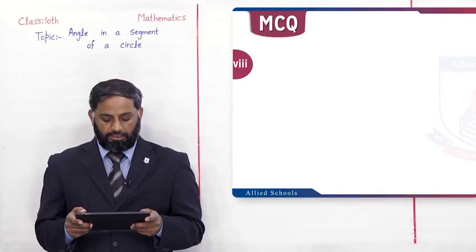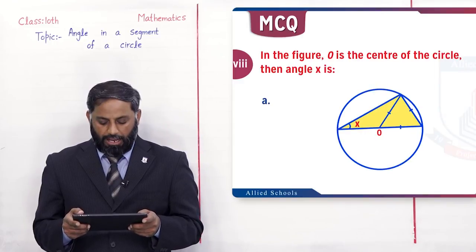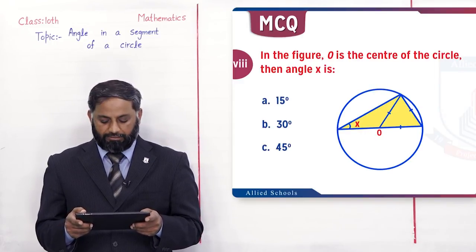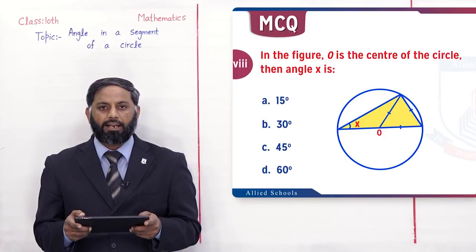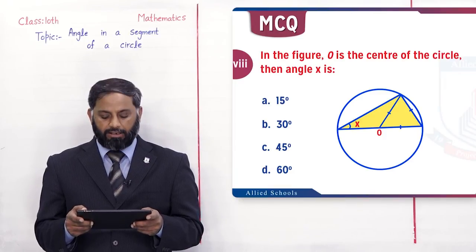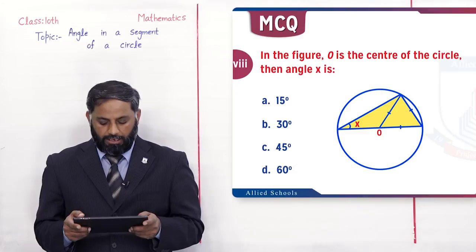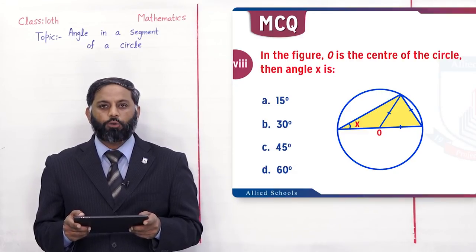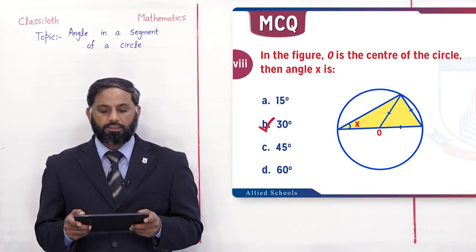Next MCQ: In the figure O is the center of the circle, then angle x is. Circle کے اندر triangle ہے، تینوں sides پہ equal signs لگے ہیں تو equilateral triangle ہے۔ Equilateral triangle کے تینوں angles = 60°، تو center پہ central angle = 60°۔ Angle x circumscribed angle ہے تو x = 60/2 = 30°۔ B option correct ہے۔